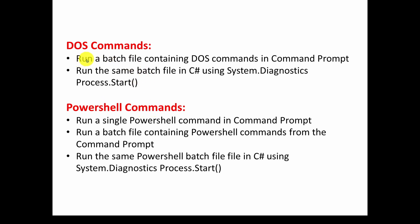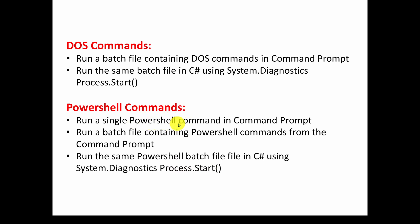What we're going to talk about is: first, how do you run a batch file containing DOS commands in the command prompt; then how do you run the same batch file in C Sharp using System.Diagnostics Process.Start — the same methodology to run a batch file as a single command. We're also going to talk about PowerShell commands: how to run a single PowerShell command in the regular command prompt, then run a batch file containing PowerShell commands from the regular DOS prompt, and then how to run that same batch file with PowerShell commands in it using C Sharp.